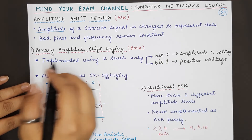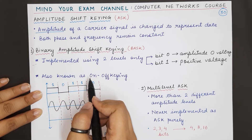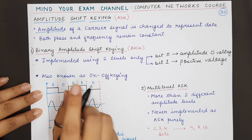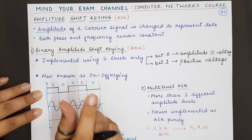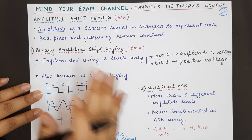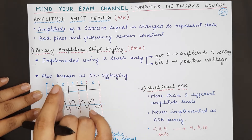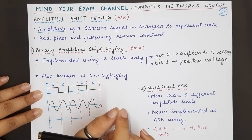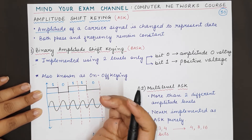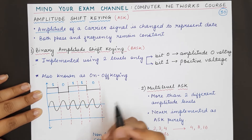This particular amplitude shift keying is also known as on-off keying, because when bit zero is represented with zero amplitude it is just like switching off the carrier signal. We receive zero amplitude signal, which is like receiving no signal at all, and 'on' means you are receiving a positive voltage.